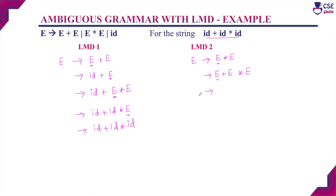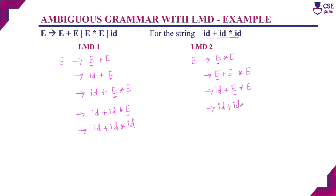Choose the leftmost non-terminal E and apply E → id. Again, choose the leftmost non-terminal E and apply E → id. Now only one non-terminal remains; apply E → id. So we have derived the string id + id * id.